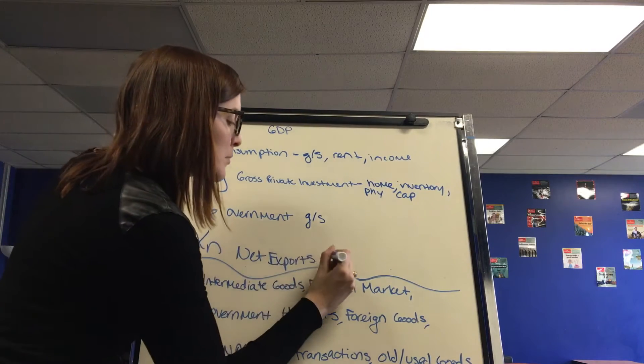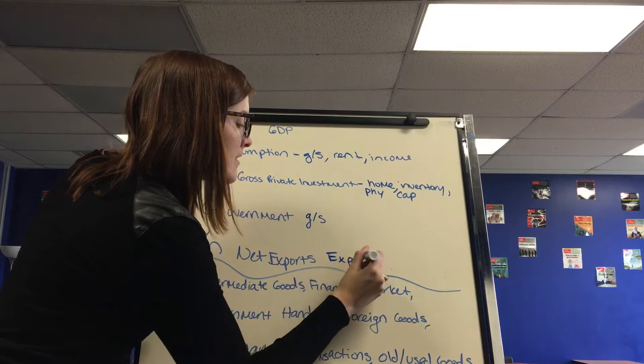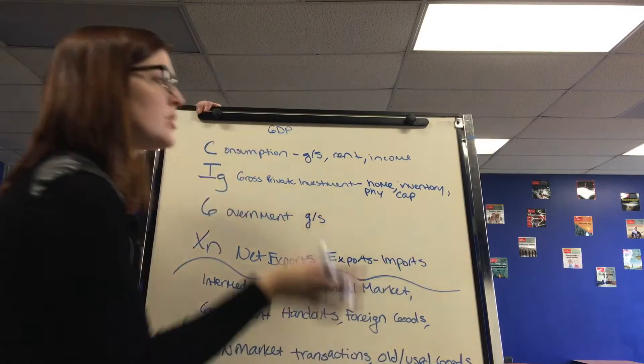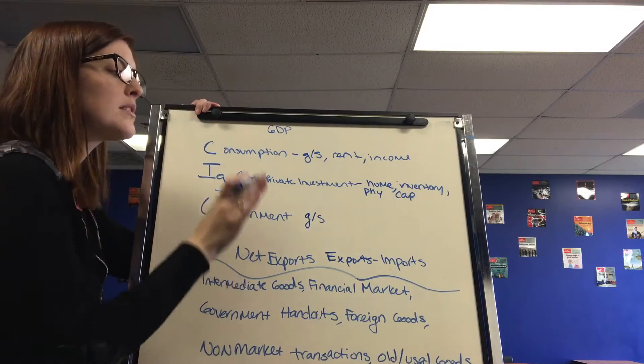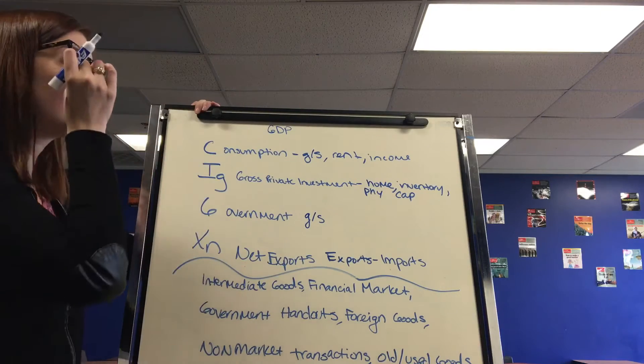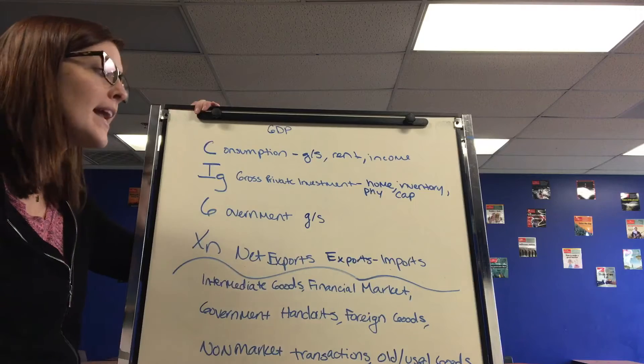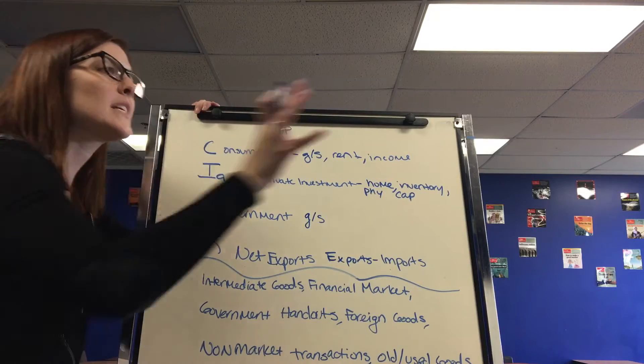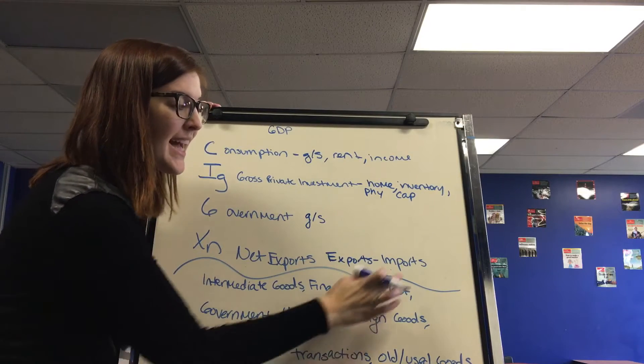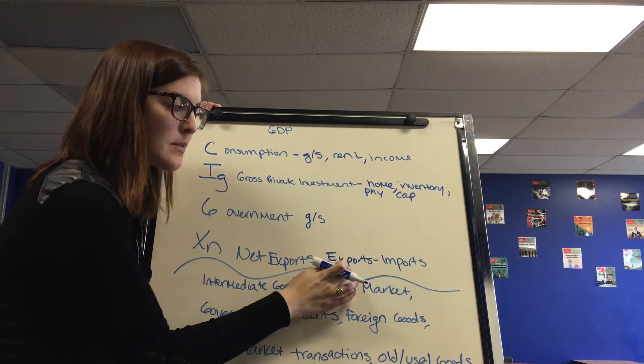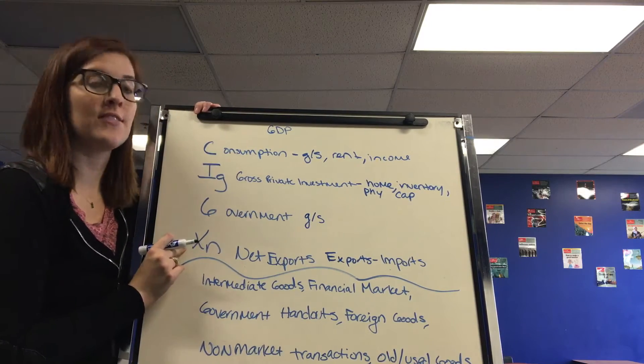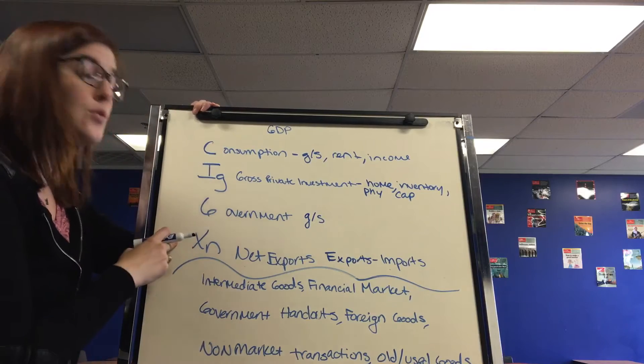And then finally, net exports. Net exports is talking about exports minus imports. So don't be misled that imports is in the equation. I like to think of it as imports not only don't count in GDP, they actually subtract from GDP. So if we buy a car from Japan, produced in Japan, it takes money out of our GDP and puts it into theirs. If we import more than we export, this component of GDP can actually be negative. And US usually has a trade deficit, so this component of ours is usually negative.